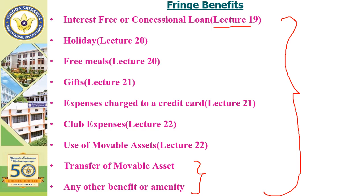The two remaining topics are: transfer of movable assets, and any other benefit or amenity. I would advise that if you want to have a command on the full topic of fringe benefits, start from lecture number 19.